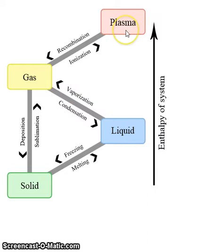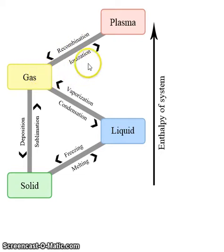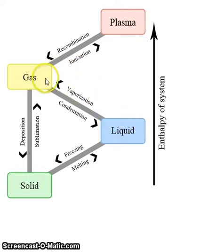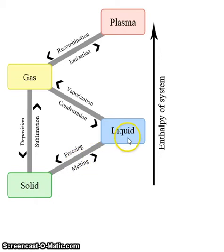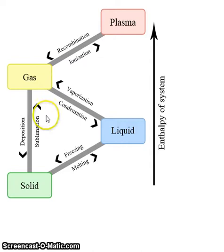Liquids are lower than gases, which are lower than plasmas. Plasmas cool and recombine into gas, and gas also ionizes to plasma. Then you have liquid being vaporized into gas, and gas condensing into liquid, and liquid freezing into solids, and solids melting into liquids. You also have gas depositing as solids, which can be known as crystallization, and solids subliming into gas.